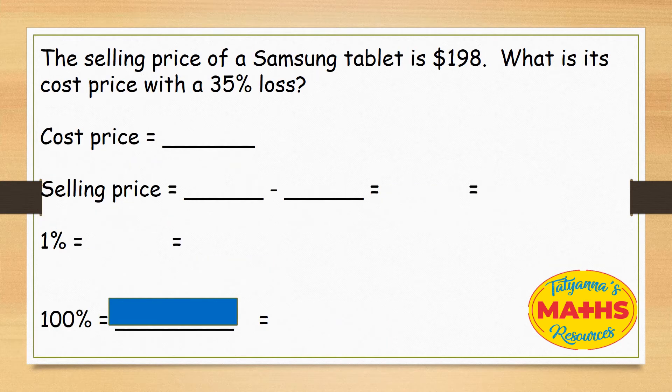The second example: the selling price of a Samsung tablet is $198. What is its cost price with a 35% loss?